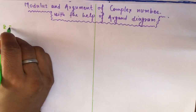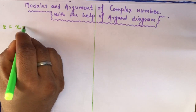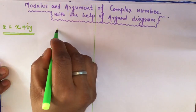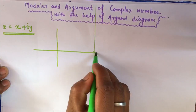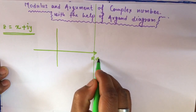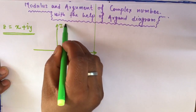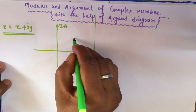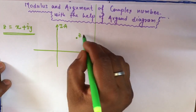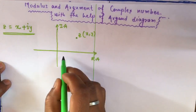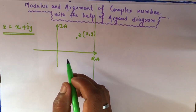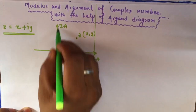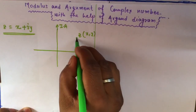Suppose z is any complex number represented in the form x plus iy. In the Argand diagram, we represent the real axis and the imaginary axis. Z is a point whose coordinates are (x, y), similar to the xy plane, where the real part is on the real axis and the imaginary part is on the imaginary axis.